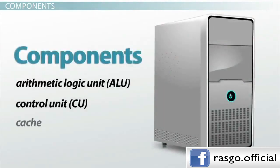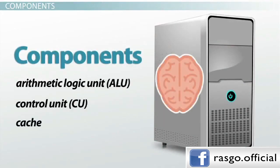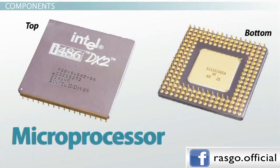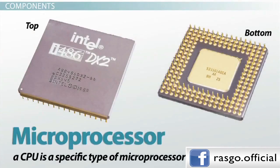Third is the Cache, which serves as high-speed memory where instructions can be copied to and retrieved. Early CPUs consisted of many separate components, but since the 1970s, they have been constructed as a single integrated unit called a microprocessor. As such, a CPU is a specific type of microprocessor.